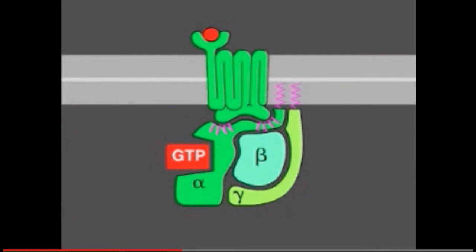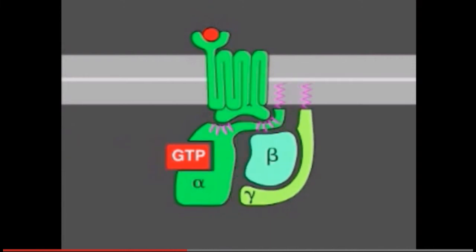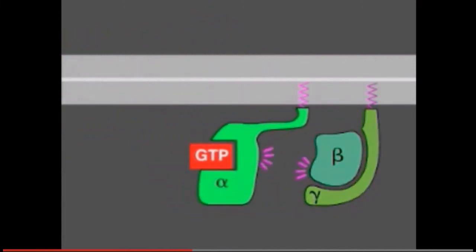GTP binding causes a further conformational change in the G-protein, activating both the alpha subunit and beta-gamma complex. In some cases, as shown here, the activated alpha subunit dissociates from the activated beta-gamma complex, whereas in other cases the two activated components stay together.